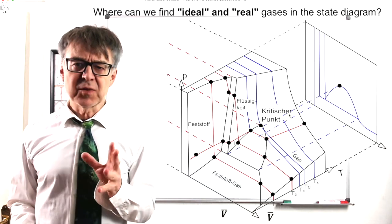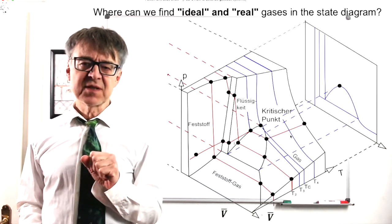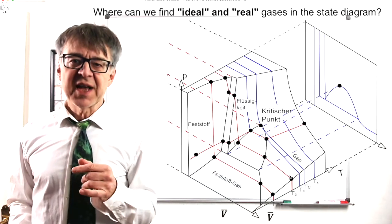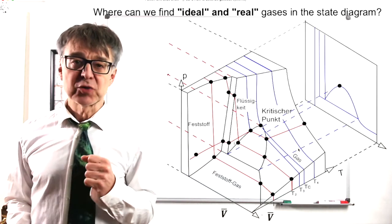Ideal gases are those that are at a proper distance from the critical point, that is, at high temperatures and large volumes.